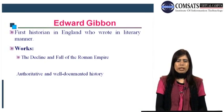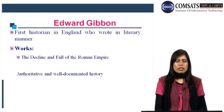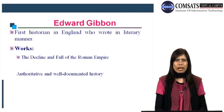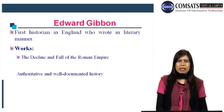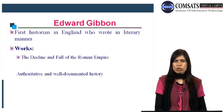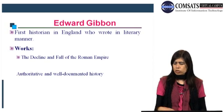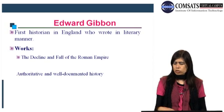Edward Gibbon was the first historian in England who wrote in a literary manner. His major work is The Decline and Fall of the Roman Empire — a well-documented, authoritative history book. History books are very different from other kinds of literature, but Gibbon was the first man who wrote in literary manner, in the form of prose, presenting his history books following prose guidelines.